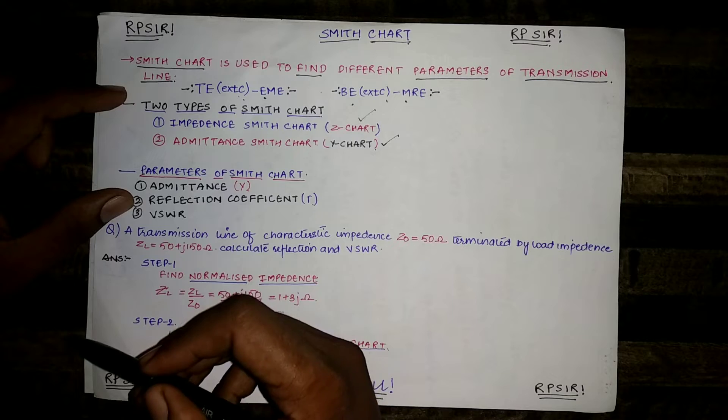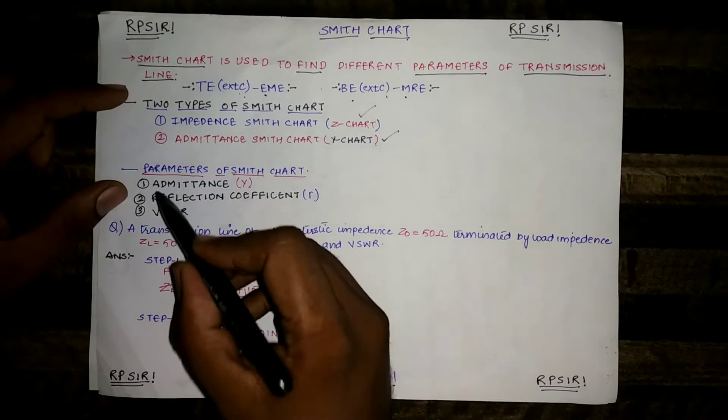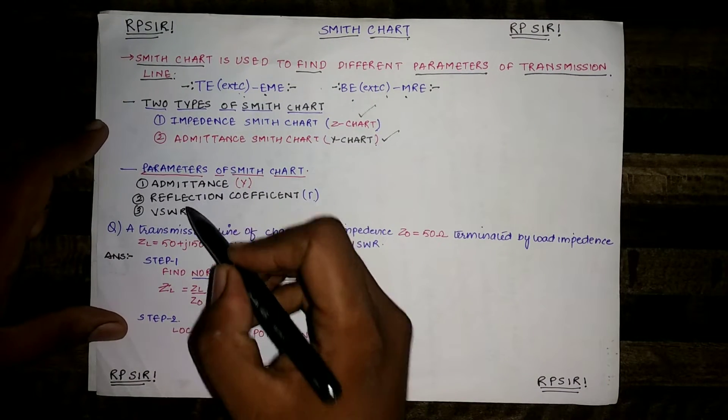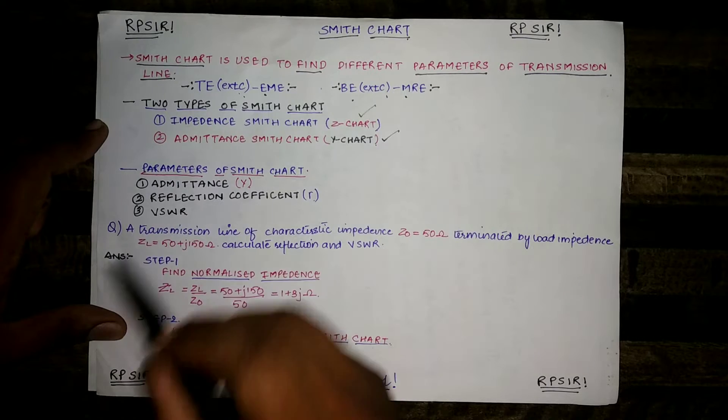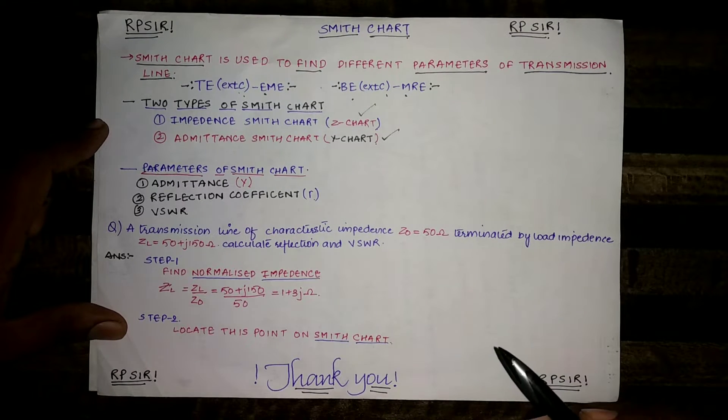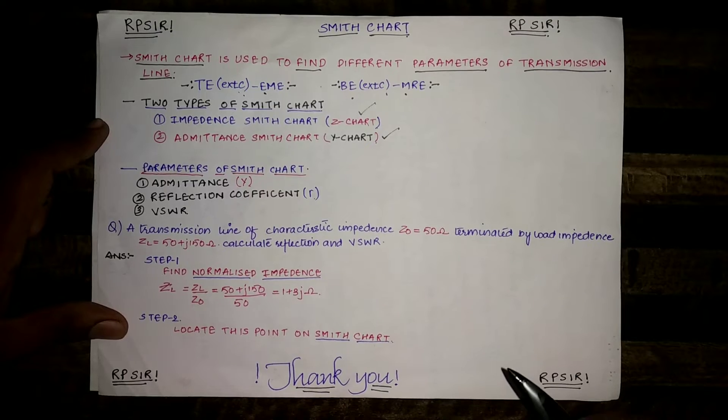We can find different parameters using Smith chart like admittance, reflection coefficient and VSWR. To understand the Smith chart let's take an example.